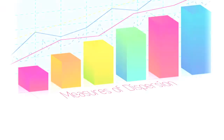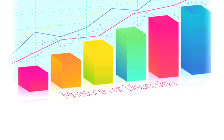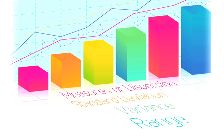Another thing we might want to look at in terms of how to organize the information is how far is the data dispersed? What are the measures of variability or dispersion, like the range, variance, or standard deviation?